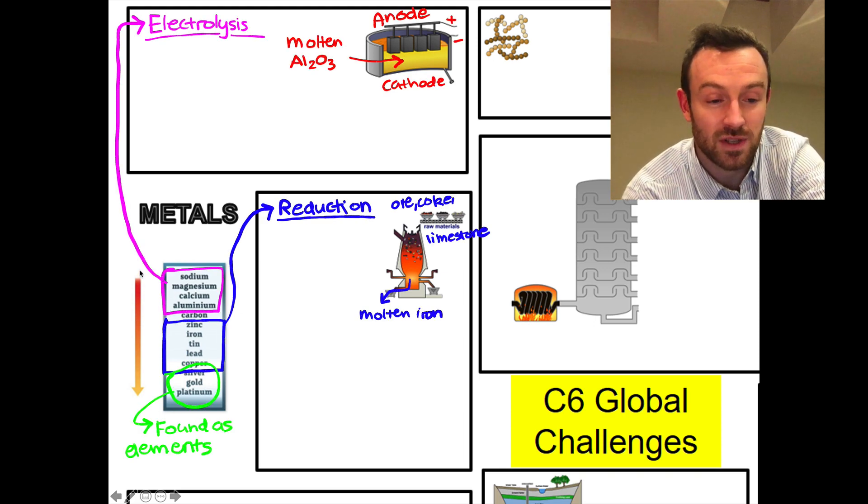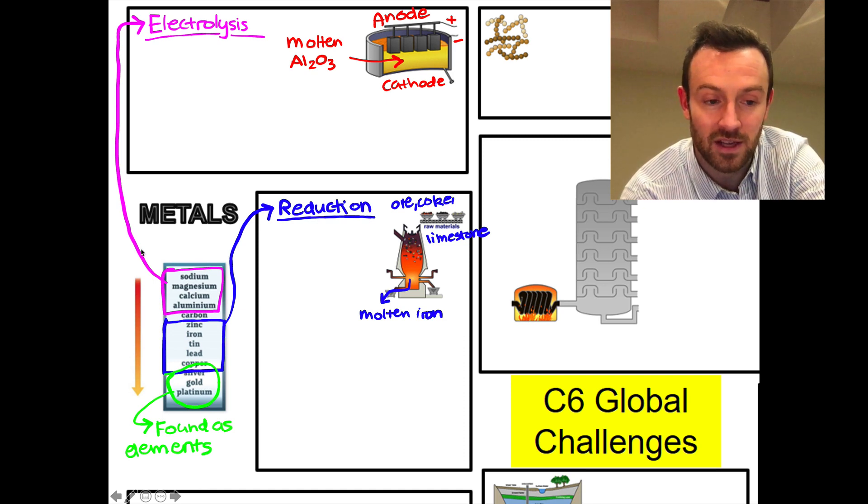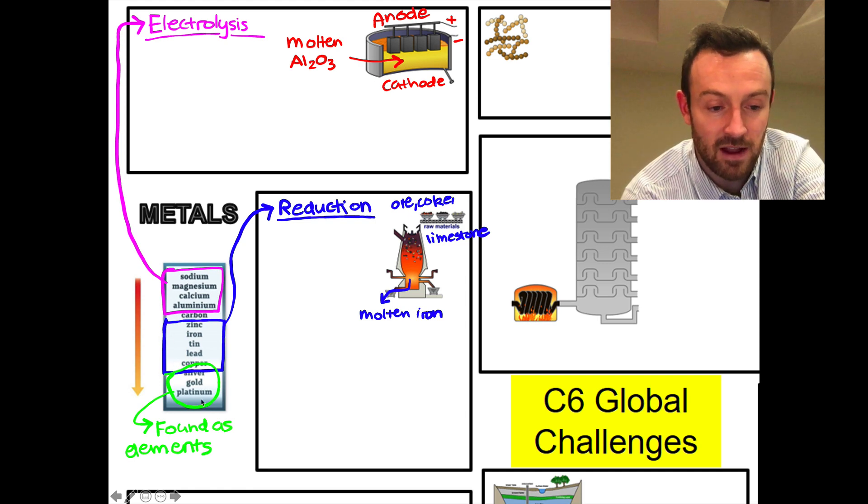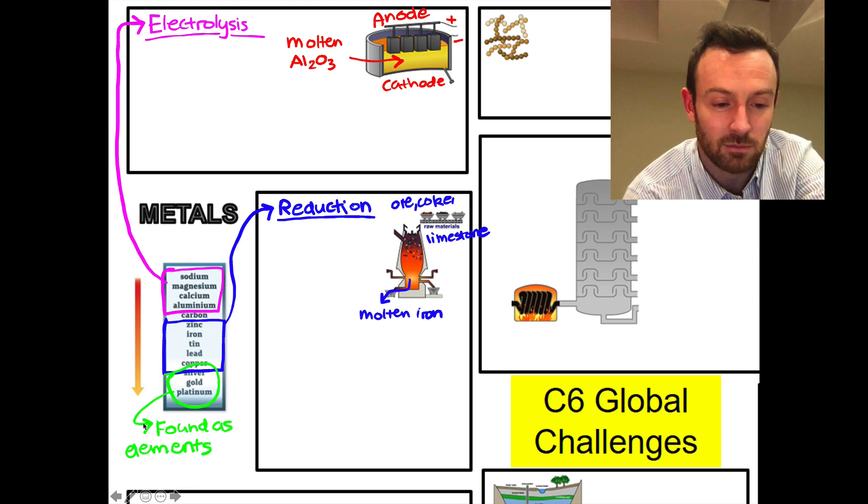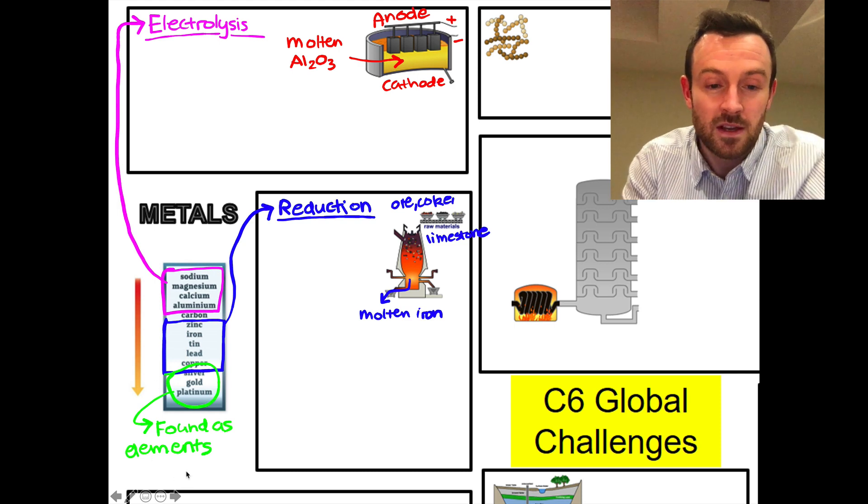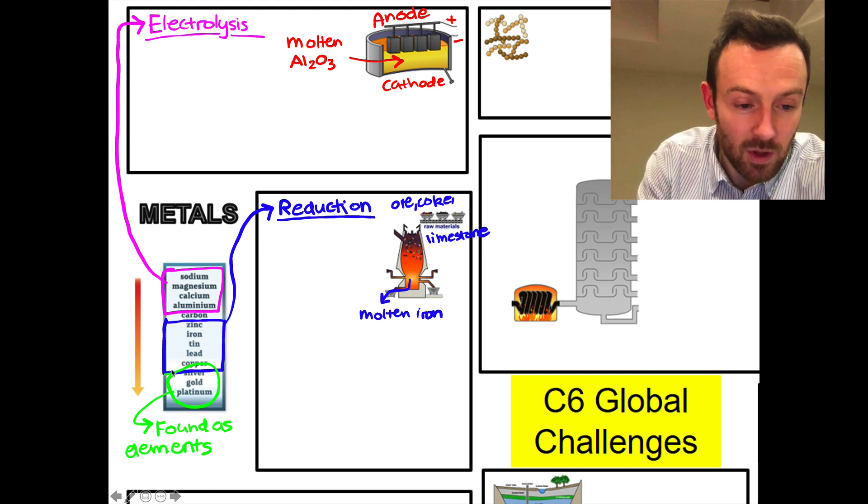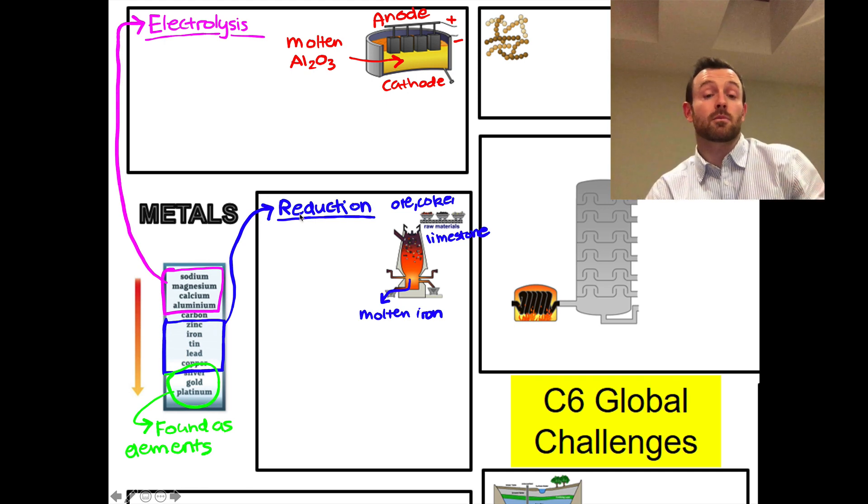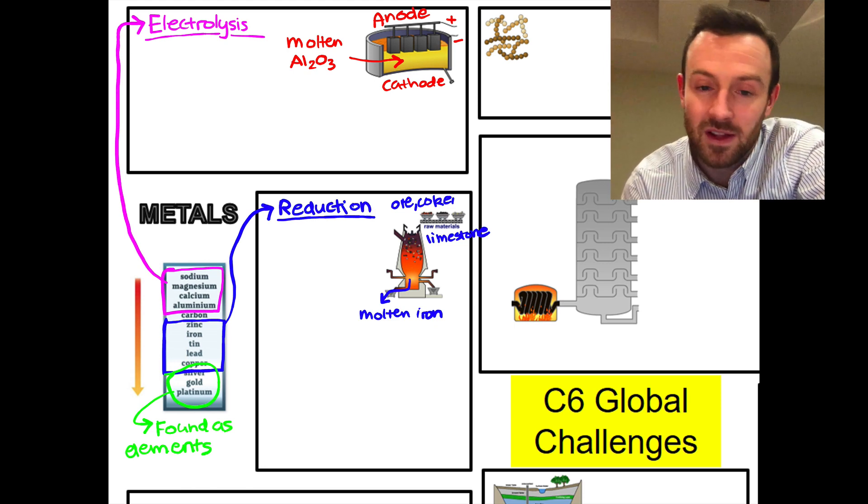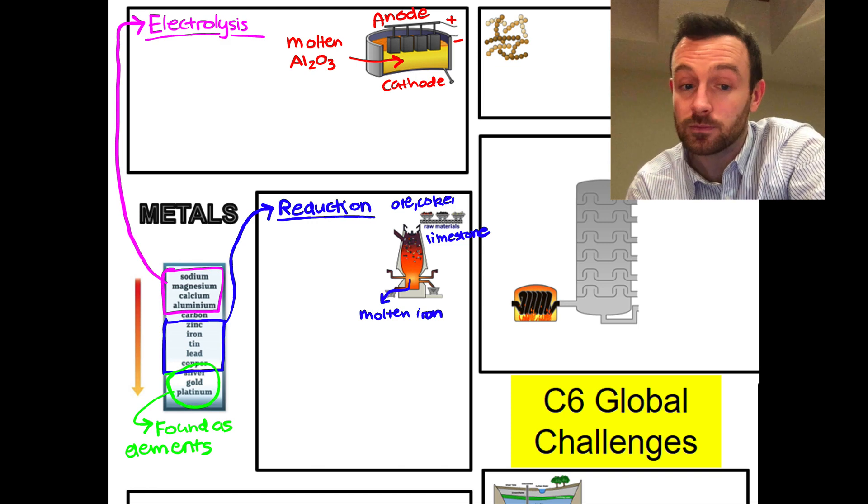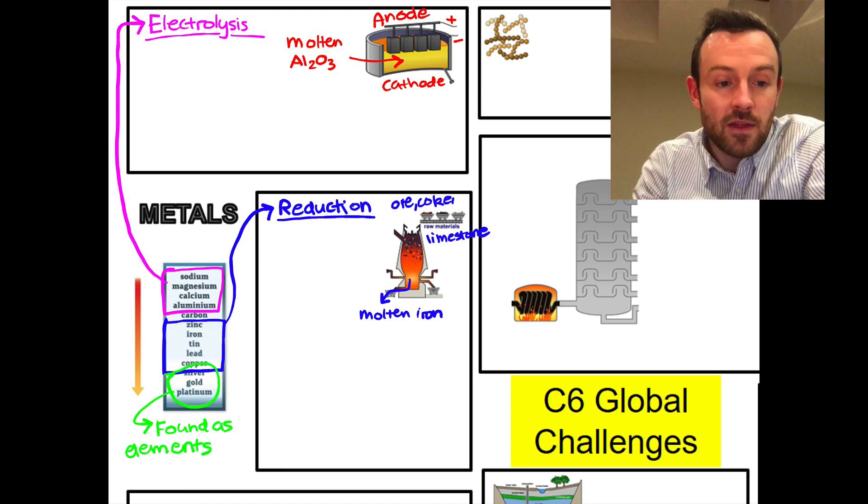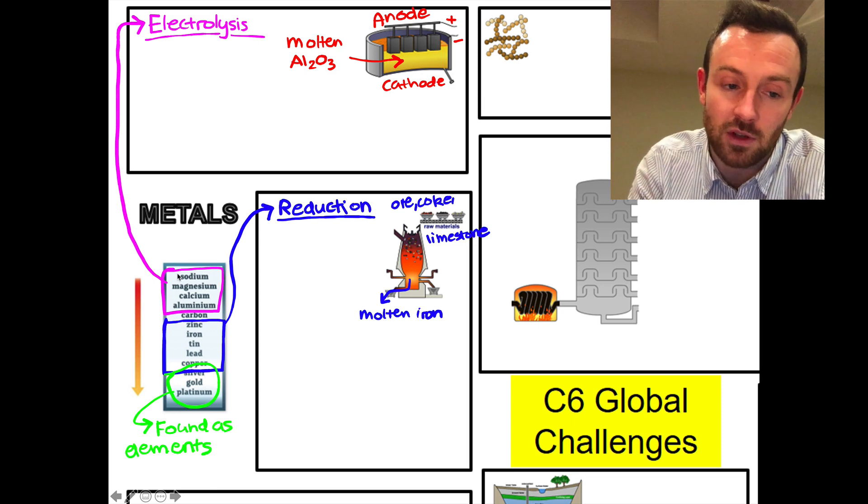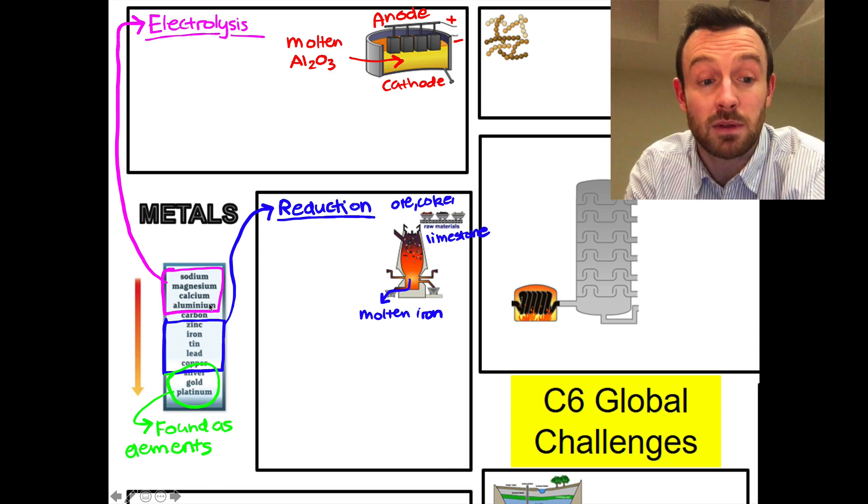To start with we need to look at the reactivity series over here. This shows decreasing metal reactivity as we go down this side. Metals that are very unreactive are just found as elements, so things like silver, gold, and platinum we just find them lying around, not as compounds. Then the next set of elements are the ones from copper up to zinc. These elements are less reactive than carbon, which means we can get them from their ores by reduction with carbon. For metals that are more reactive than carbon, these ones up here - sodium, magnesium, calcium, and aluminium - we have to use electrolysis to get these metals from their compounds.